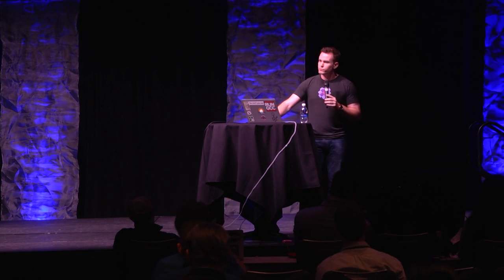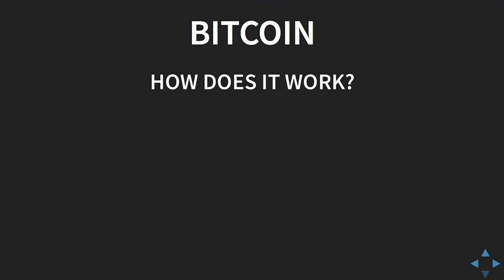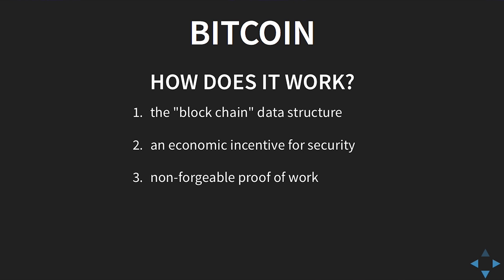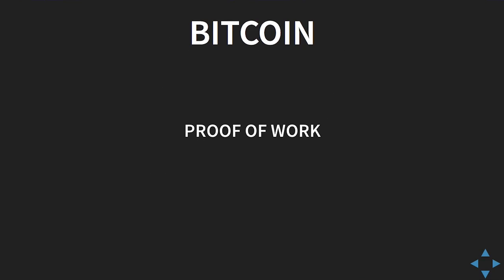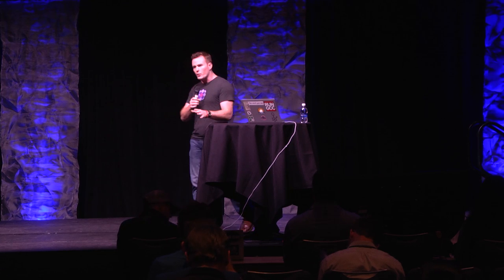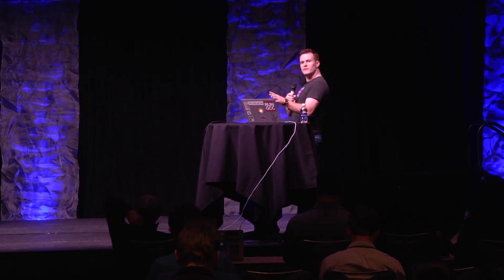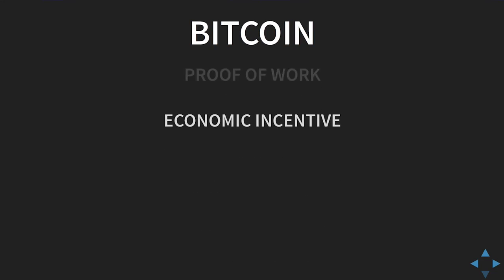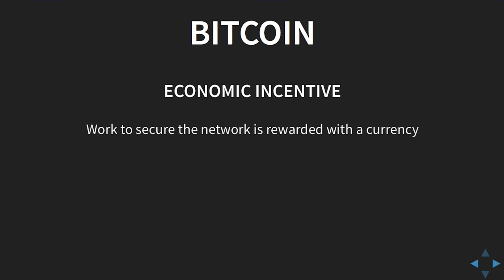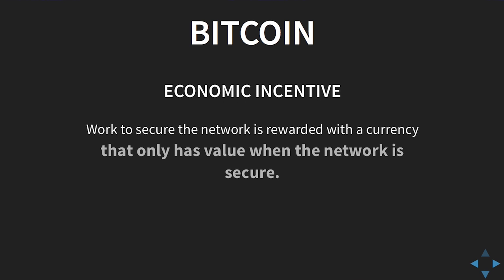The reason this works is really cool — there are three parts to it. You've got the blockchain data structure, an economic incentive for its security, and a non-forgeable proof of work — a way to prove you've done some degree of work. It's pure entropy, randomness. Your computer spends work, passes it through a hash mechanism, and if that hash matches a special arbitrary pattern, you are rewarded with new currency. The work done to secure the network is rewarded with a currency that only has value when that network is secure. If the network's security diminishes, so too does the currency's value, which disincentivizes miners from attacking it.